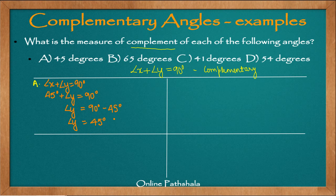So the complementary angle of 45 degrees is 45 degrees. When you add 45 plus 45 you get 90 degrees, which confirms that is the solution for part a.